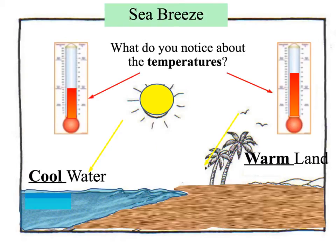If you look at these two thermometers, the one over the land is a higher temperature than the one over the water. That's because during the daytime, the land absorbs heat a lot quicker, the surface gets hotter, and so you've got a higher temperature. The water is going to feel cooler because it doesn't change temperatures nearly as quickly as the land does.